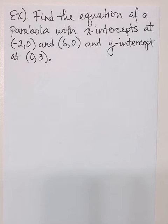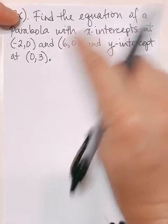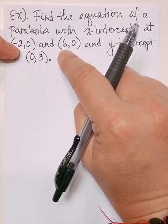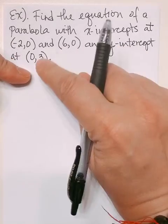Hi students, here we have another example of writing a quadratic equation. This example gives us x-intercepts at (-2,0) and (6,0) and a y-intercept at (0,3).